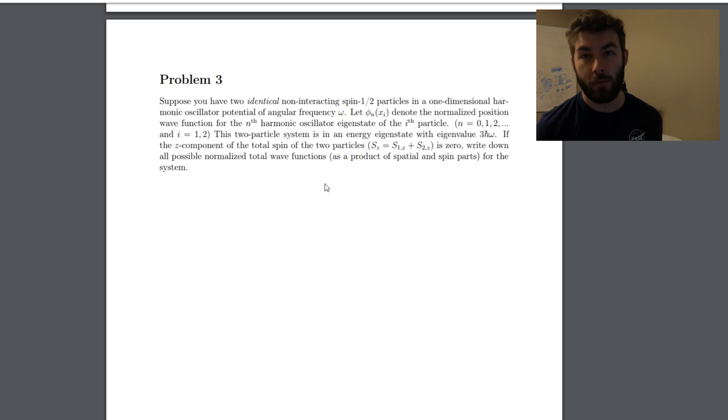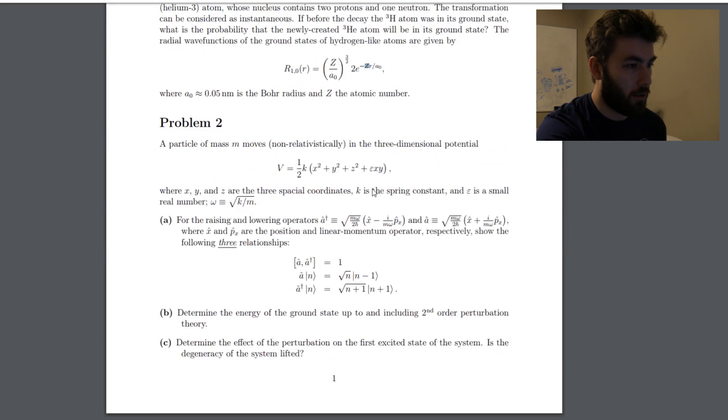So you know that they're fermions, so the wave functions should be anti-symmetric, which means they could be anti-symmetric in either the spin or the spatial part of the wave function. So it looks like that one's adding a little bit more of a complication to it, but not really, if you know what fermions are. So at first glance, that doesn't look too bad.